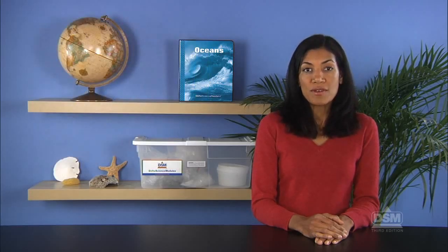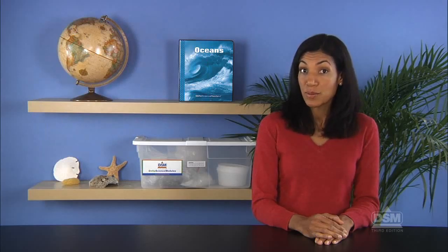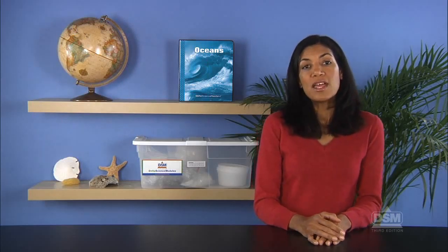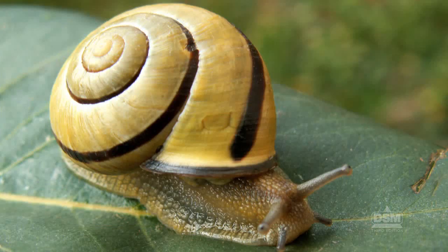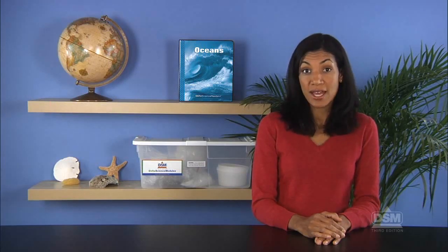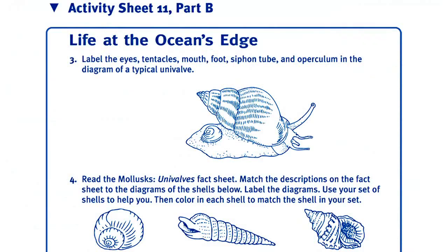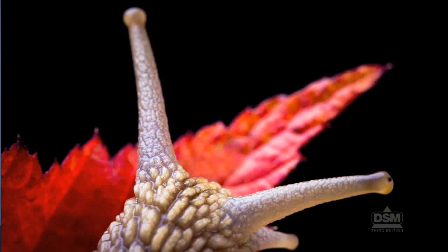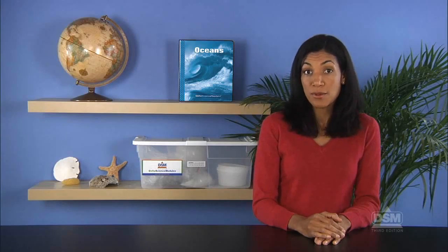Next, draw students' attention to the univalves, also known as gastropods. Inform the class that gastropod comes from the words that mean stomach and foot. Note that all univalves are gastropods, but not all gastropods are univalves — for example, the slug is a gastropod but not a univalve. Gastropods are abundant and diverse, outnumbered in the animal kingdom only by insects. Distribute Activity Sheet 11, Part B and point to the diagram of the univalve at the top of the activity sheet. Describe the univalve as having a well-developed head with eyes, a mouth, and tentacles, just like ordinary pond or land snails.